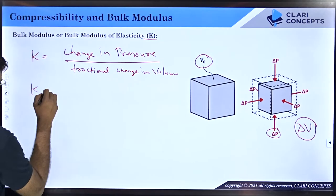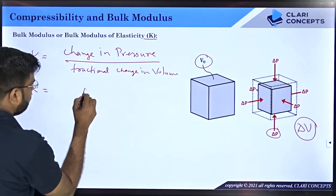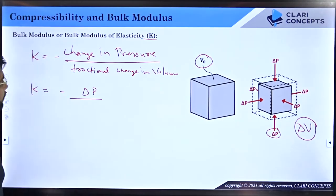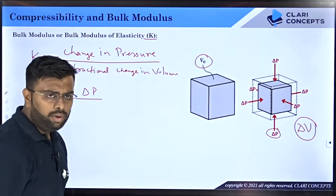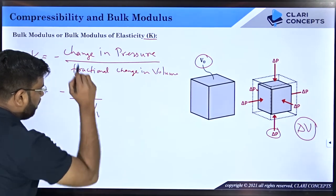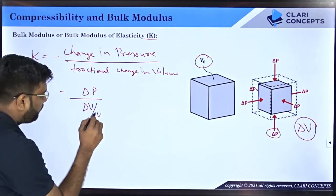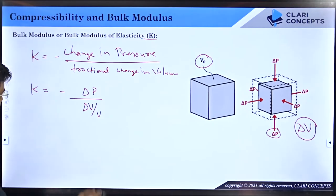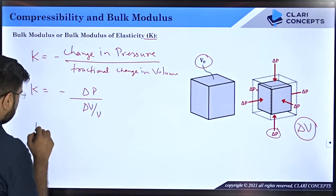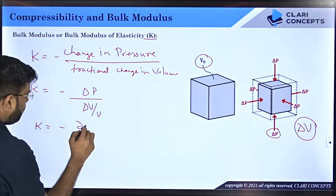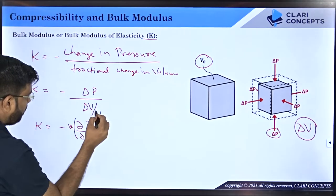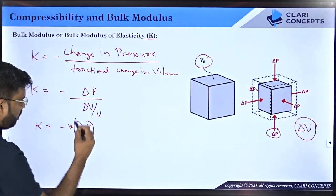That means K equals delta P, and I will put a negative sign — I will explain why. The fractional change in volume is delta V divided by V, where V is the original volume. So K can also be written as minus del P divided by del V, multiplied by V, because the denominator of the denominator goes up.